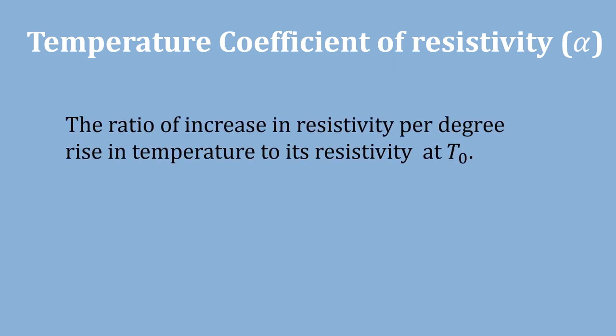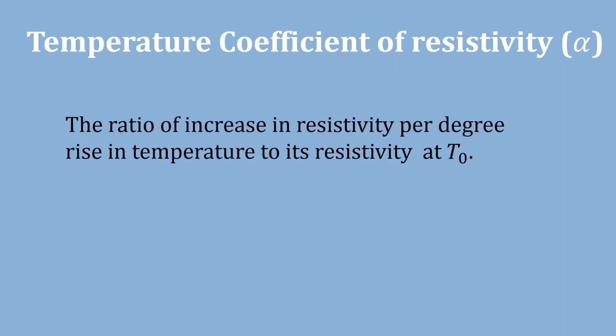Temperature coefficient of resistivity alpha. The ratio of increase in resistivity per degree raise in temperature to its resistivity at T0. Alpha is equal to rho T minus rho 0 divided by rho 0 into T minus T0.